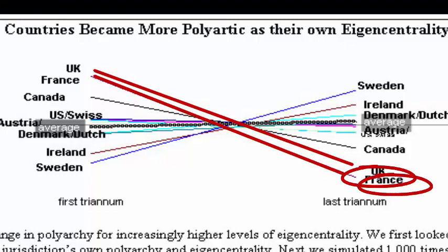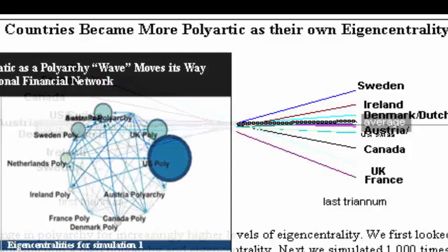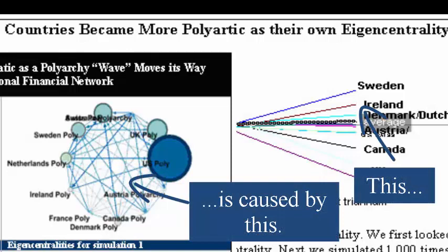So we don't want to give the impression that all jurisdictions' polyarchy rises as they become bigger and more central. We want to give a dynamic view where jurisdictions are becoming more democratic or more autocratic over time,